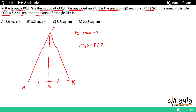That means the area of triangle PQS will be equal to the area of triangle PSR. Now we do some more construction: X is any point on PR, and T is the point on QR such that PT is parallel to SX. So we place T on QR, join PT, and draw SX parallel to PT, which gives us point X on PR. We need to find the area of triangle RTX.